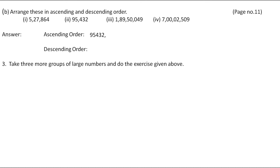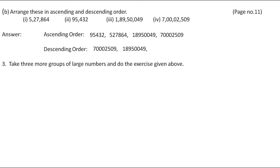The next smallest number is the 6-digit one: 5,27,864. Now we have to compare the two 8-digit numbers. This number has 1 in the highest place and the other has 7 in the highest place. As 7 is greatest and 1 is smallest, the next number is 1,89,50,049, and then comes 7,20,509. For descending order: the greatest number is 7,20,509, next is 1,89,50,049, then 5,27,864, and last comes the smallest number, 95,432.